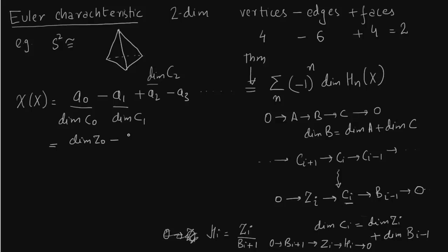So dimension of a₀ is dimension of C₀ because there is no B_{-1}. What about a₁? a₁ is dimension of C₁ which will be dimension of Z₁ plus dimension of B₀. I'm just expanding the term now. So what is a₂? It is dimension of Z₂ plus dimension of B₁. a₃ dimension of Z₃ plus dimension of B₂. We are all using this chain 0 → Z_i → C_i → B_{i-1} → 0.